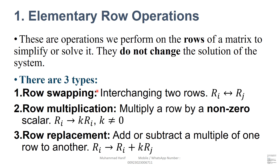There are three types. One, row swap: interchanging two rows, in this form. Second, row multiplication: multiply a row by a non-zero scalar, in this form, where k is not equal to zero. Third, row replacement: add or subtract a multiple of one row to another.